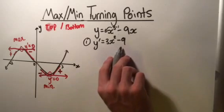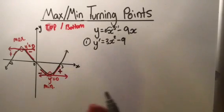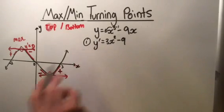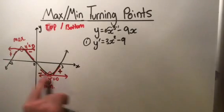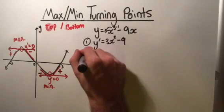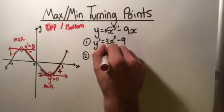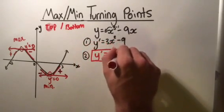Once I have this derivative, instead of substituting an x value to find a gradient for a particular tangent, I actually want to know when the derivative is zero. I want to find for what x values this derivative equals zero, because we know that at the turning points the tangent is a straight line so it has a derivative of zero. So I make y dash equals zero — that's our rule for a turning point.